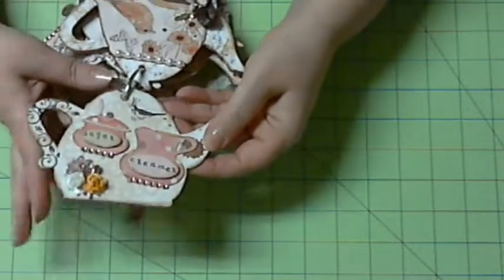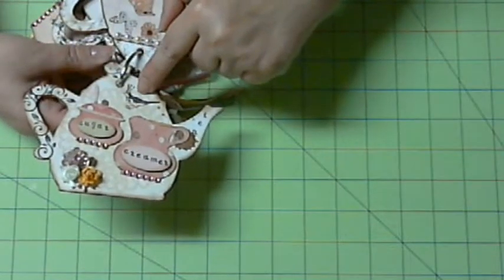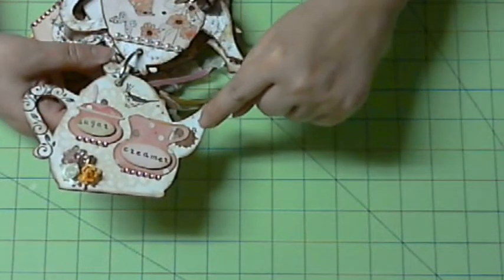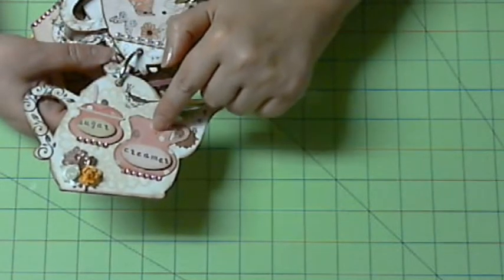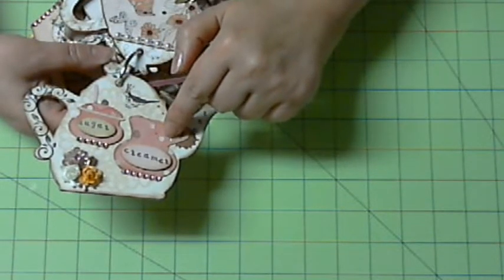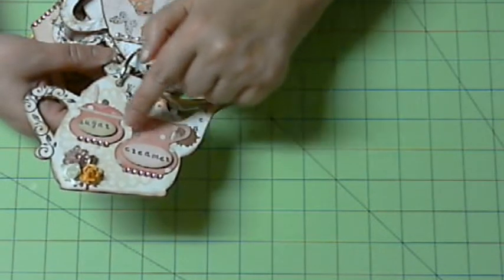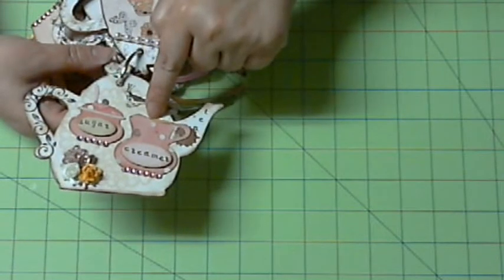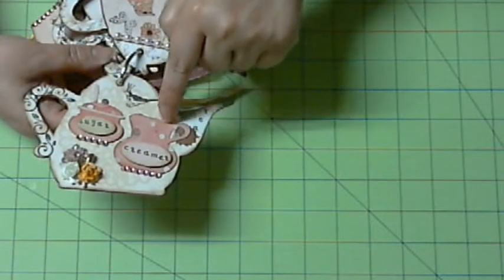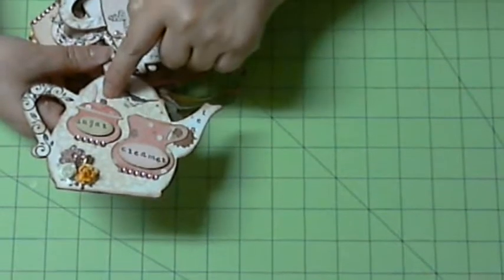And then here, again I stamped it on the handle and then I stamped it with the bird and then I stamped the word tea here. The sugar bowl and the creamer I cut from the same Cricut cartridge Love You Latte. And then I stamped it sugar and creamer. I put some, senior moment, some Glossy Accent here and some glitter here.